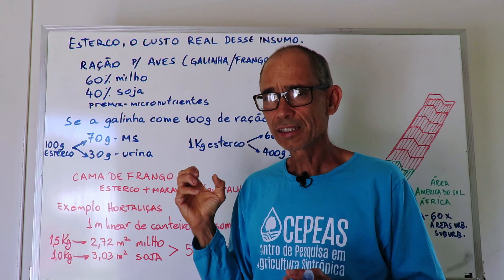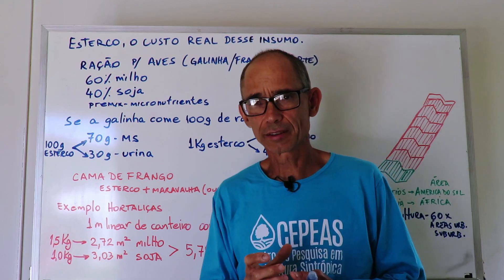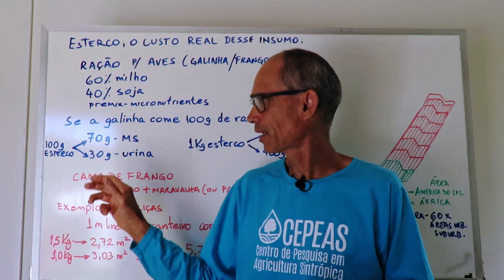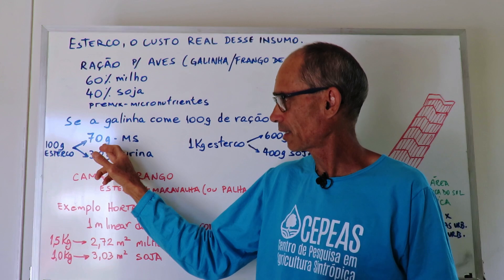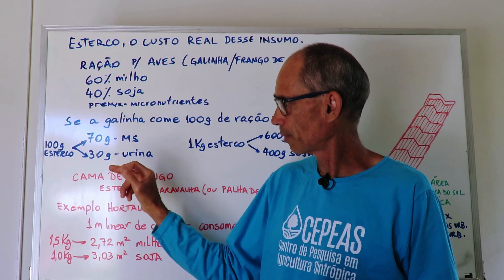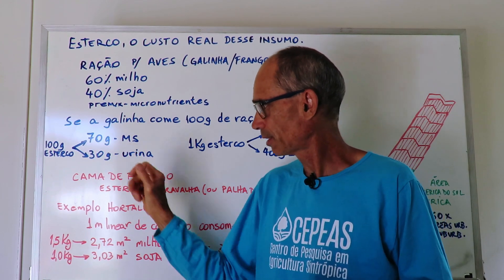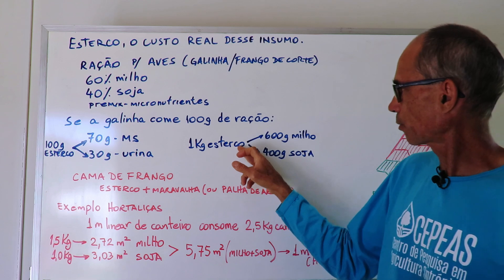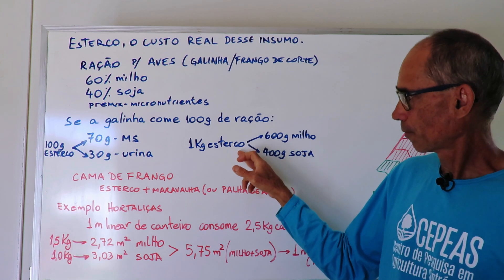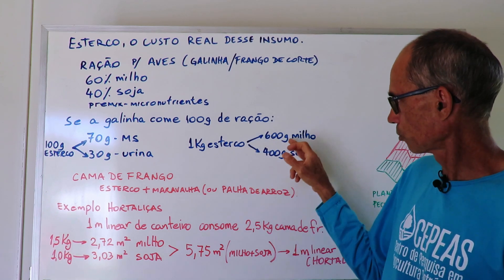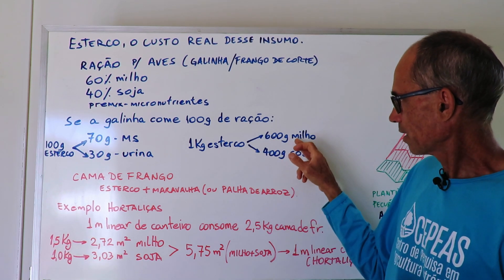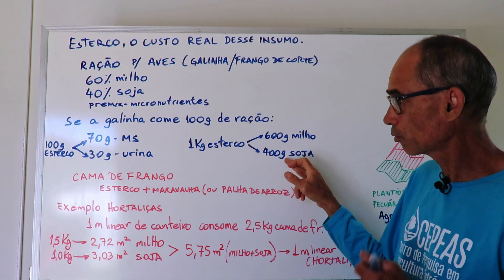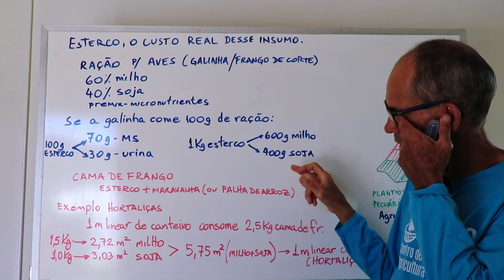So the animal ate 100 grams of food and produced 100 grams of esterco — 70 grams solid and 30 grams liquid. This means that 1 kg of esterco produced by the animal contains 600 grams originating from the corn it ate and 400 grams from soy.